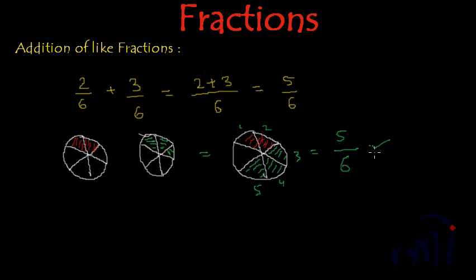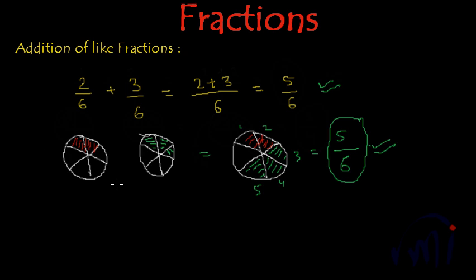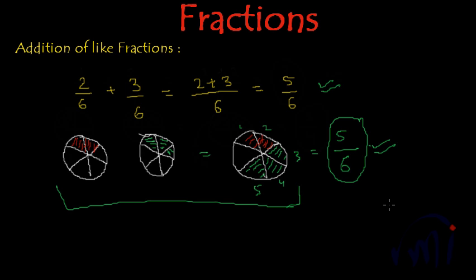This way also you get the same result as you got using the arithmetic method. This is the addition of like fractions, and why we add only the numerator — that we have understood using this pictorial representation of addition. So I think you have learnt addition of like fractions.